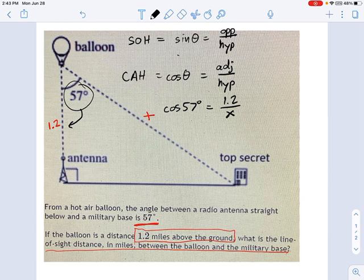Now we've got an equation we can use. I want to know what x is, the line of sight distance between the balloon and the base. So in this case, all I do is rearrange this to be x equals 1.2 over cosine 57 degrees.